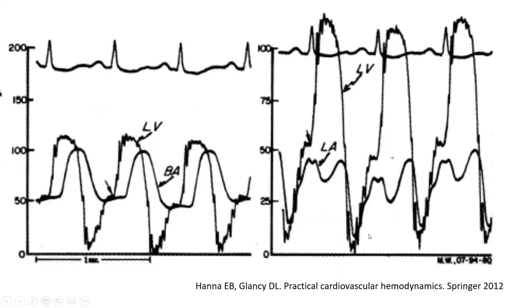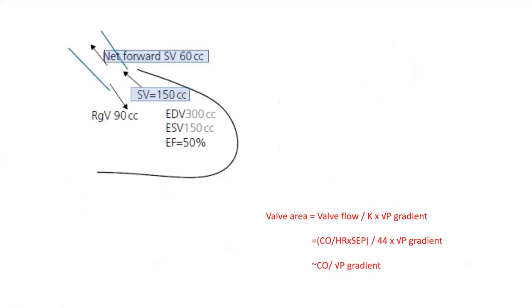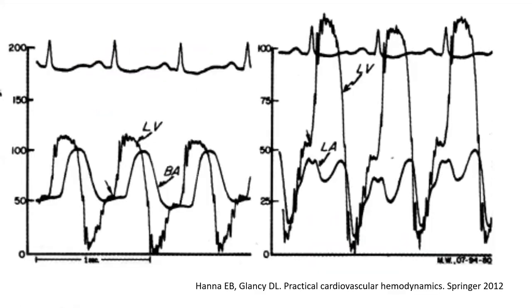Austin Flint murmur differs from true mitral stenosis murmur: it tends to be mid-diastolic and its duration differs from anatomic mitral stenosis. In this patient with severe AI plus some AS, if the cardiac output by thermodilution is 4 L/min and the gradient is 30 mmHg, should you calculate valve area as 4 divided by √30? This is a common pitfall. The answer is no.